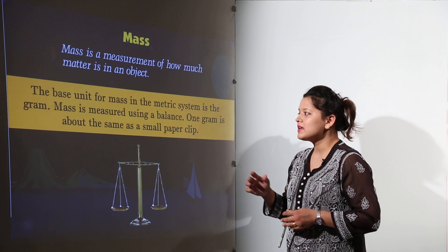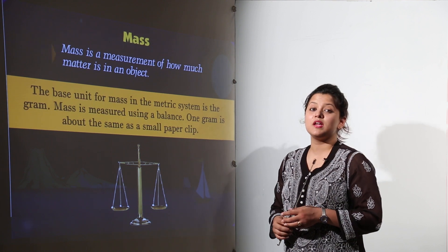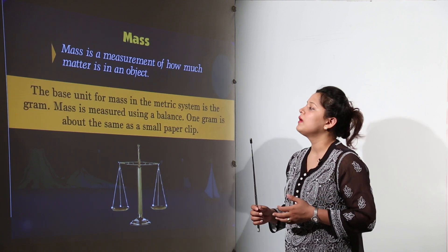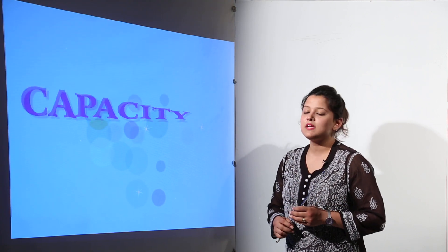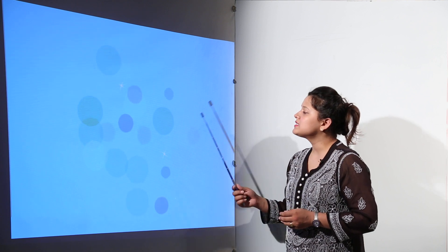So ideally see mass can be measured in many units. We get kilograms and so on. But the base unit according to metric system for measuring mass would be grams only. Next is the capacity.